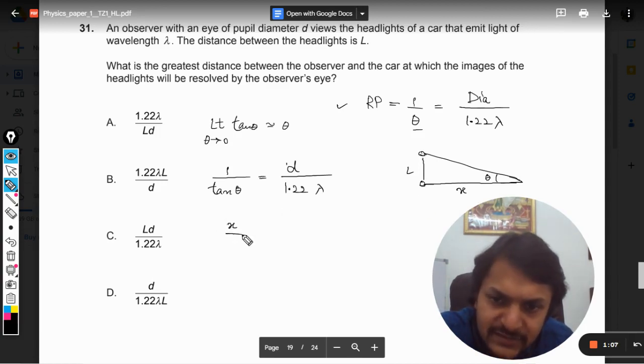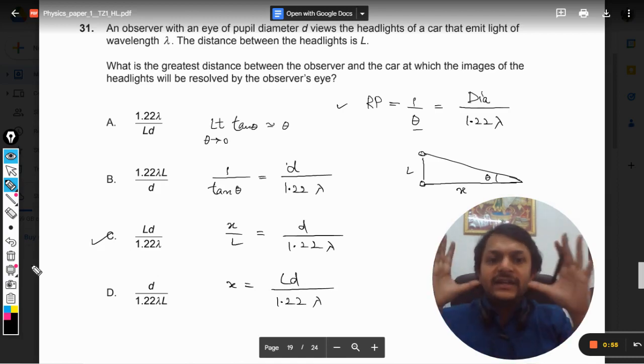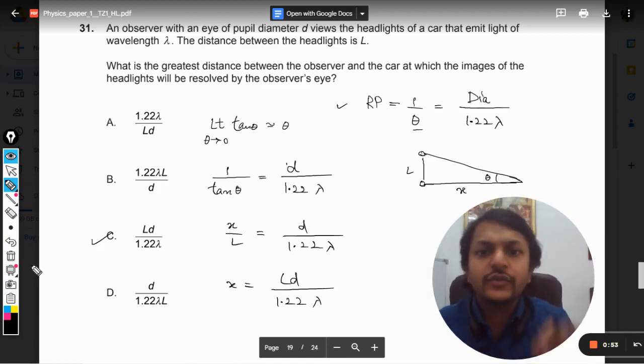This thing becomes x by L equals d divided by 1.22 lambda. And x becomes L d divided by 1.22 lambda. And on comparing, we find that C is the correct answer for this question.